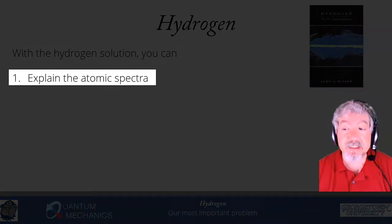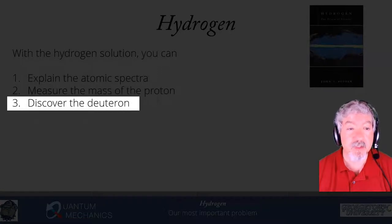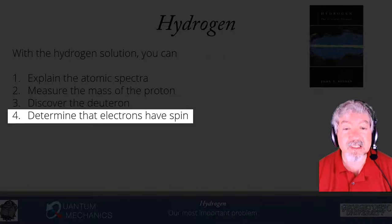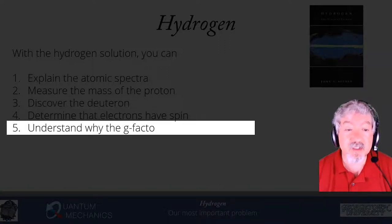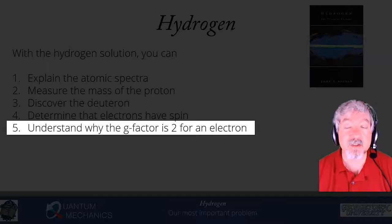Number one: we can explain the atomic spectra — the sharp lines you see when you put light through a spectroscope. Number two: we can measure the mass of the proton, just by measuring light. Number three: we can discover the deuteron — that there's an extra isotope, a second and even third, but primarily used for the deuteron. Number four: we can determine that electrons have spin. Number five: we can understand why the so-called g-factor, associated with the spin and how the spin reacts to a magnetic field of an electron, has a value of two, and also why, when we take into account quantum field theory corrections, the value is slightly bigger than two.